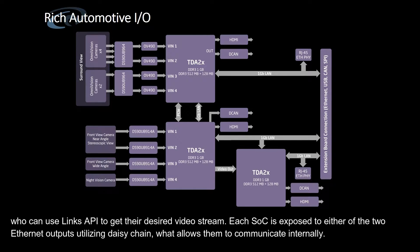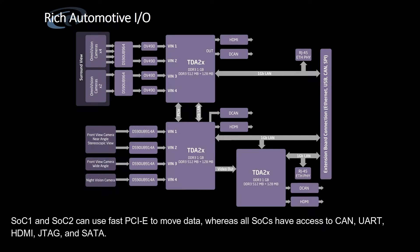Each SoC is exposed to either of the two Ethernet outputs utilizing a DAISY chain, allowing them to communicate internally. SoC-1 and SoC-2 can use fast PCIe to move data, whereas all SoCs have access to CAN, UART, HDMI, JTAG and SATA.